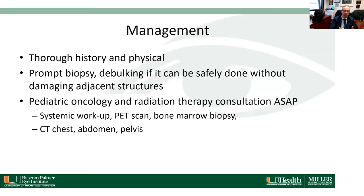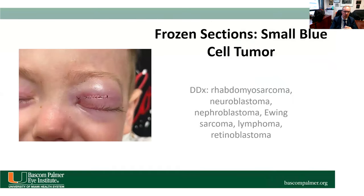Management of rhabdomyosarcoma includes a thorough history and physical examination. As ophthalmologists, we perform a prompt biopsy, and if we can safely debulk the lesion without damaging adjacent structures we do so. We then refer the patient as soon as possible to pediatric oncology for systemic workup and consideration for radiation therapy.